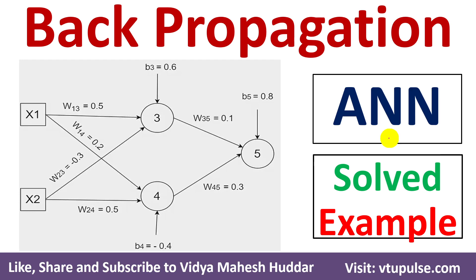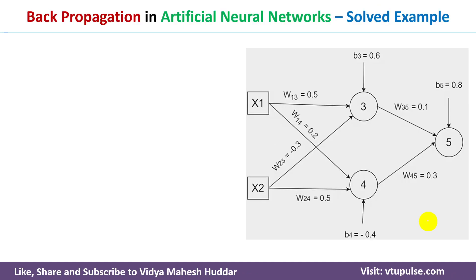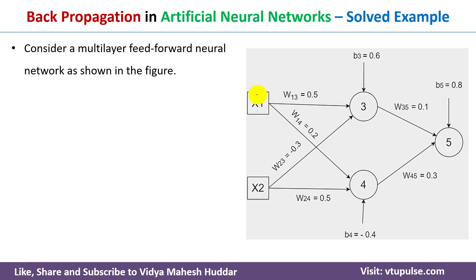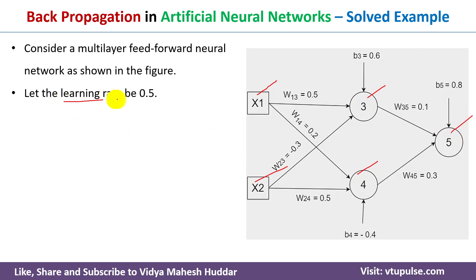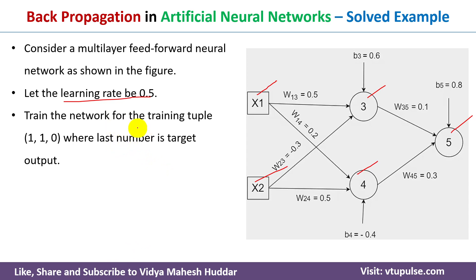Welcome back. In this video I will discuss how to solve a numerical example using the backpropagation algorithm in artificial neural networks. In previous videos I have solved a few examples; links for those videos are given below. In this case we have been given the following neural network where we have two neurons in an input layer, two neurons in a hidden layer, and one neuron in an output layer. Let the learning rate be 0.5. We need to train the network for the training tuple 1, 1, 0 where 1 and 1 are the inputs and 0 is the target output.